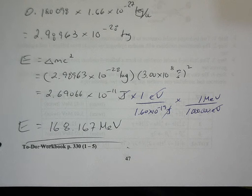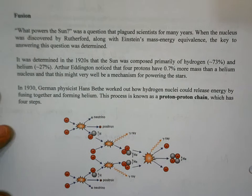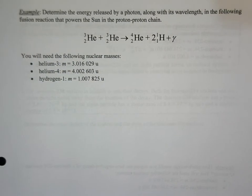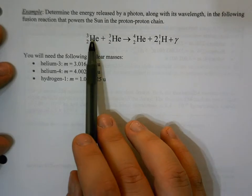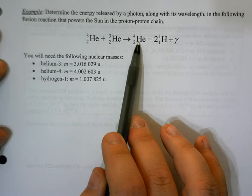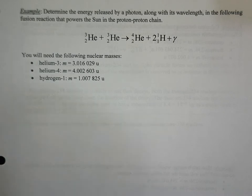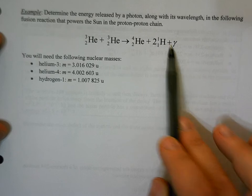Turning to fusion: we take lighter nuclei and combine them to make a heavier nucleus, releasing energy. The energy calculation is exactly the same as for fission — mass defect equals reactants minus products. We'll look at part of the proton-proton chain in the sun: two helium-3 nuclei fuse to produce helium-4 plus two protons plus a gamma photon. We want to find the energy released and the wavelength of the photon.